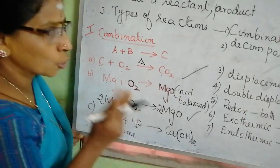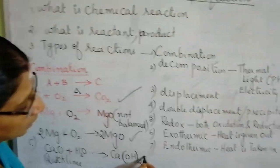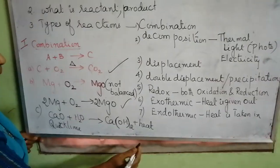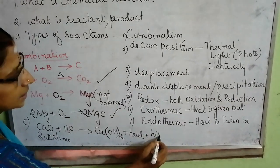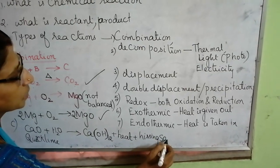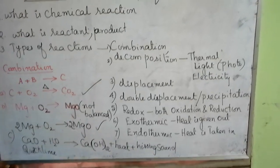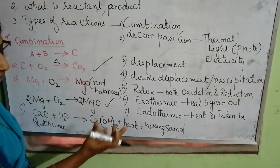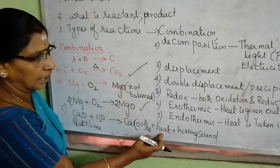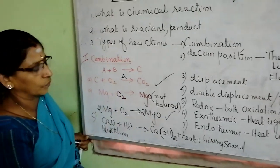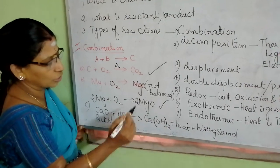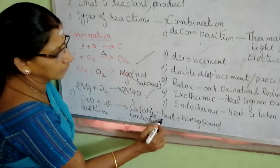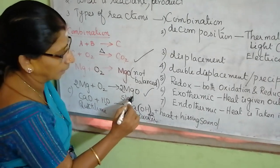We can observe two more observations in this reaction. Heat will be given out. So, it is an exothermic reaction. And also, it will give a hissing sound. So, what are the two observations made when calcium oxide, that is quick lime, treated with water? We get heat. The vessel will get heated up. And a hissing sound will come. This calcium hydroxide is called lime water. Slaked lime.